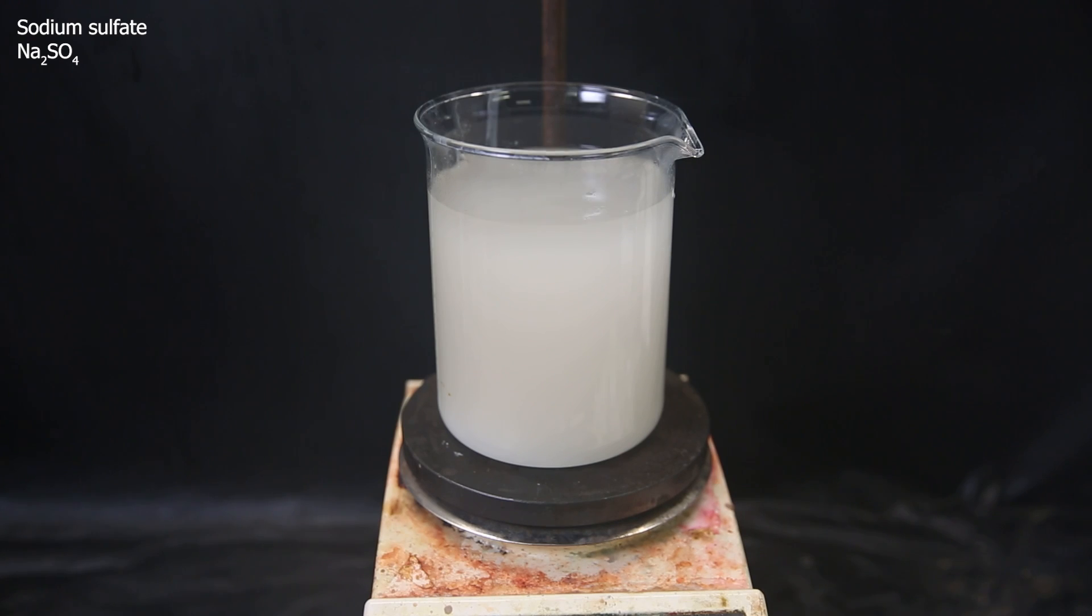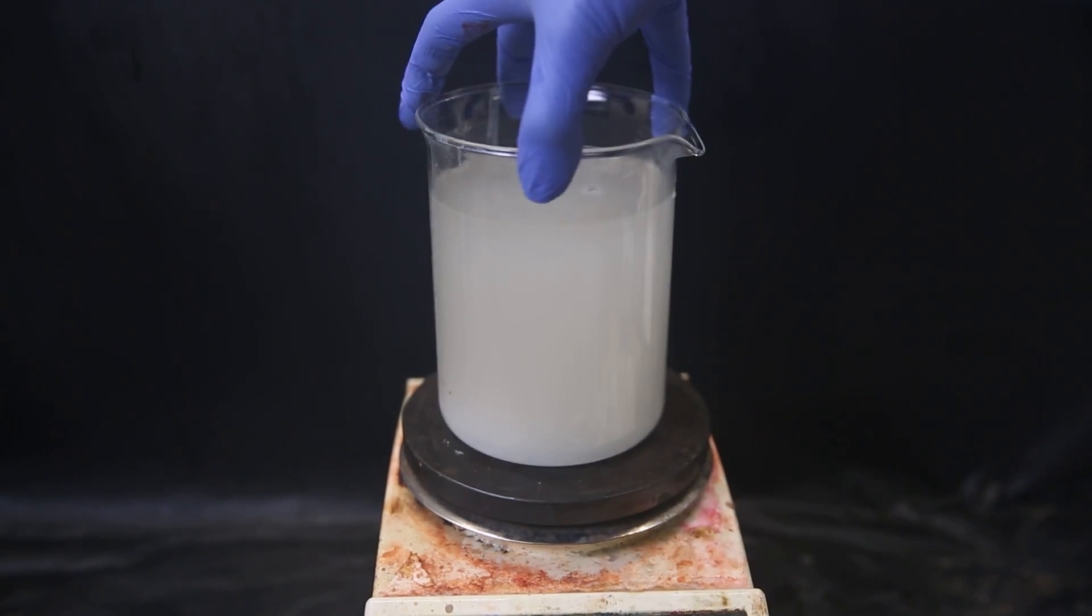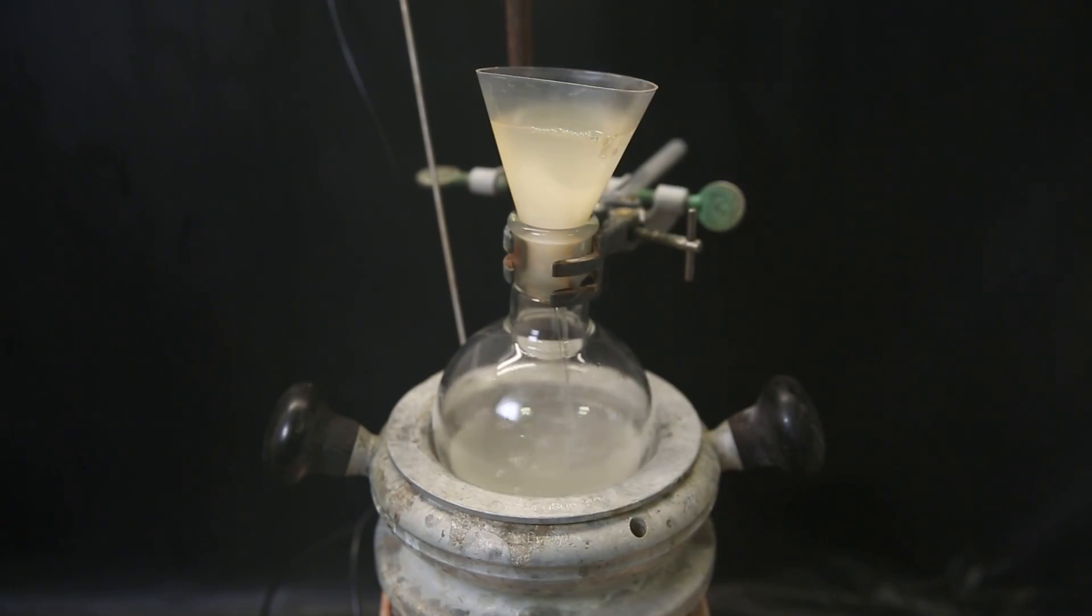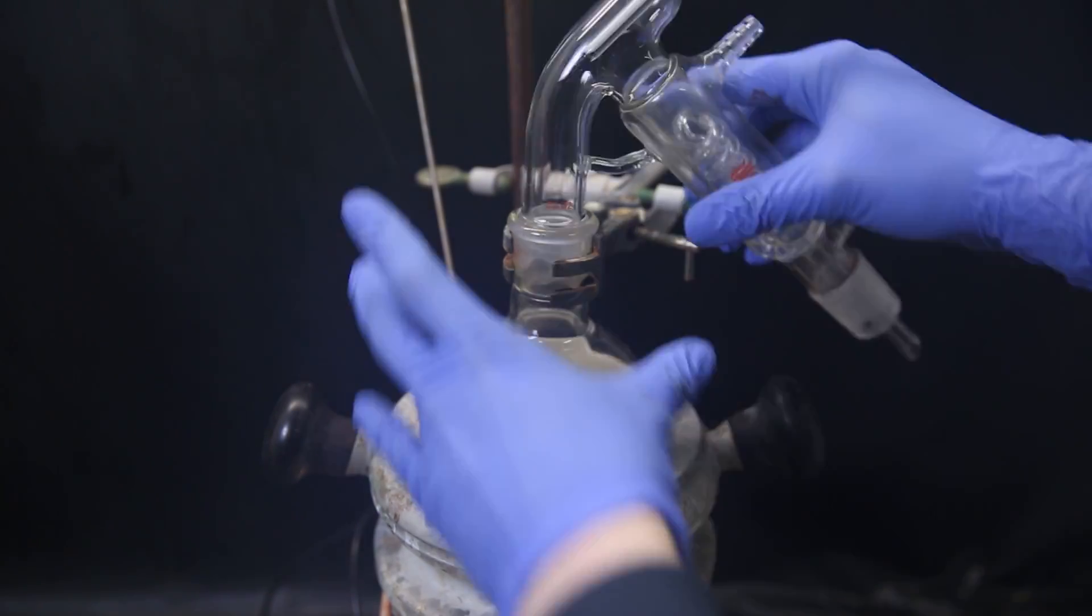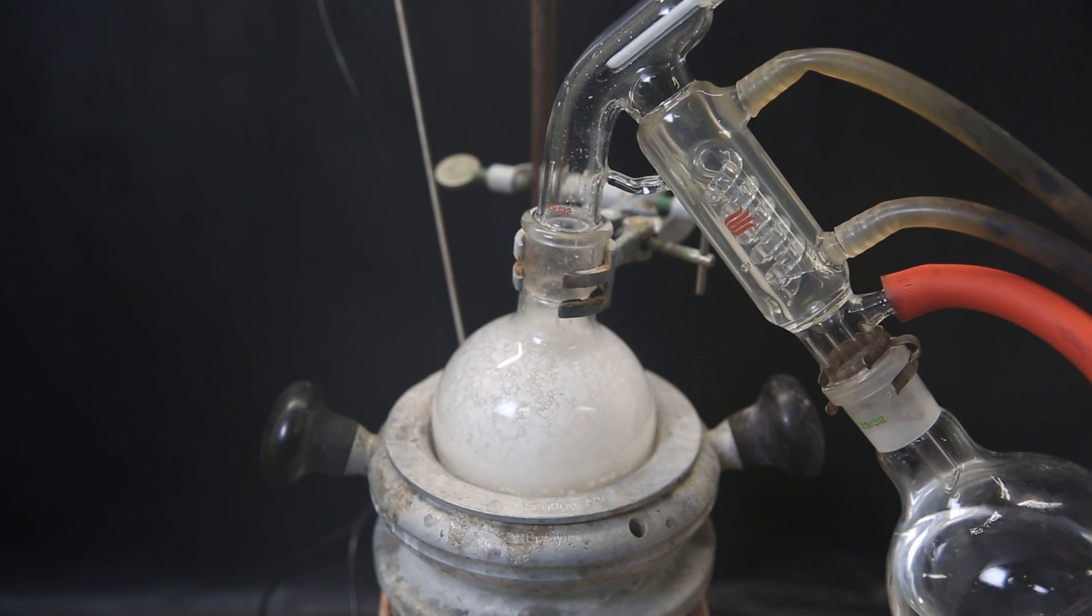The transparency doesn't really change. And I then filter it all through some cotton directly into a flask to remove the sodium sulfate. I set this up for vacuum distillation to remove all the solvent, giving an off-white solid.